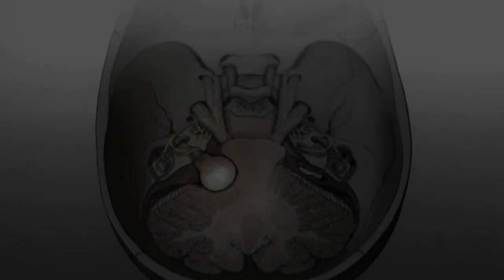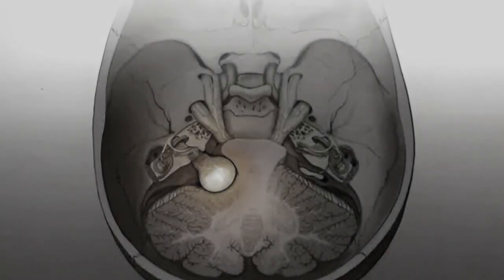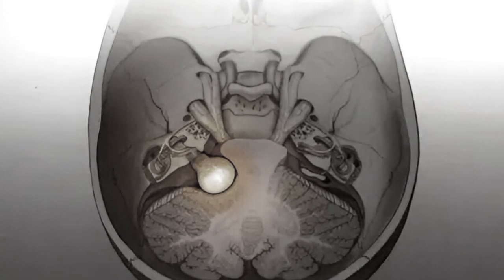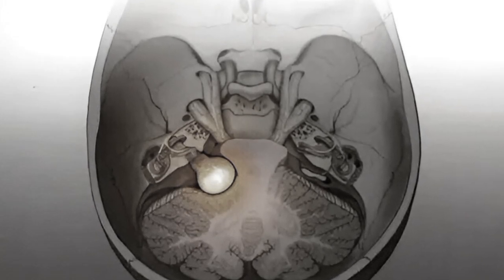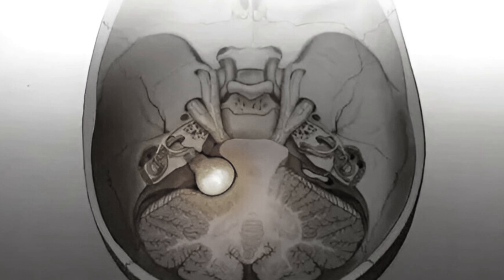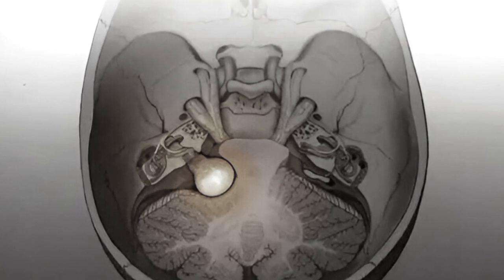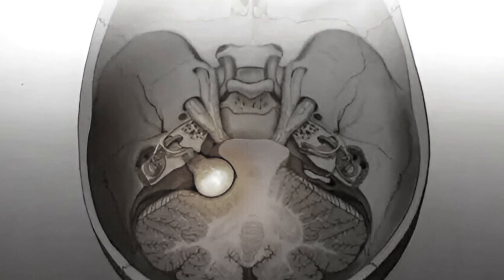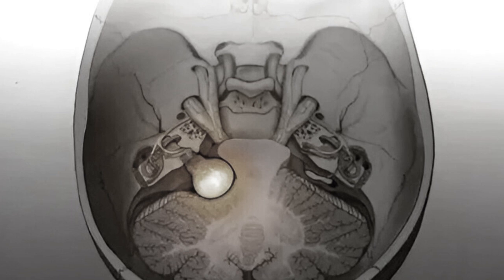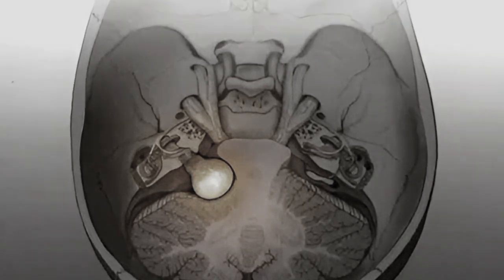Now let's review some key points about vestibular schwannomas. Vestibular schwannoma, also known as acoustic neuroma, is a benign tumor that arises from the vestibular portion of the eighth cranial nerve. It originates at the transition zone between Schwann cells and glial cells, known as the Obersteiner-Redlich zone.